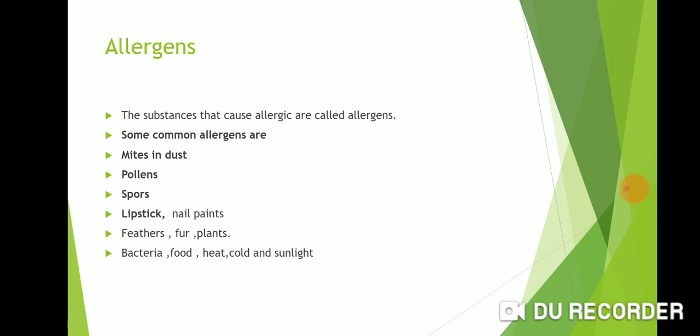Some food items also cause allergy. Some people are sensitive to milk or meat. Cold and sunlight are also allergens — some people are sensitive to sunlight. Temperature conditions can also cause allergy.